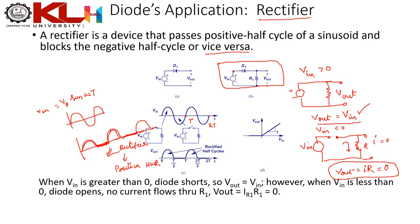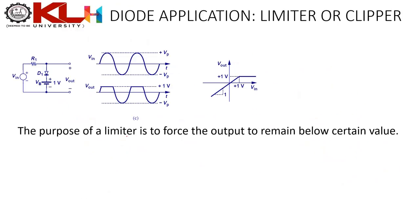Another very important diode application is the limiter circuit, also called the clipper circuit. Most textbooks and web resources call it the clipper. The clipper circuit has a V_in (usually sinusoidal, V_in = V_P sin(ωt)) with peak value +V_P and trough −V_P.